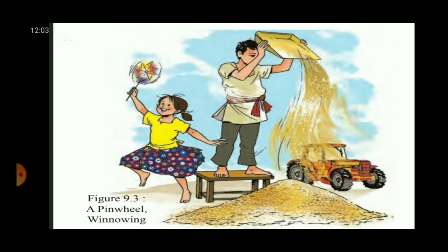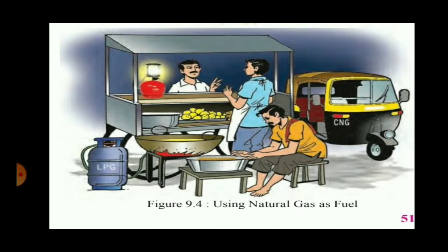In figure 9.3, a girl is playing with a pinwheel, and her father is doing the activity of winnowing grain — removing the lighter husk particles and dirt from the grain. The wind blows away the husk while heavier grains are collected at the base. In both activities — moving the pinwheel and winnowing — the moving air, which we call wind, is helping them.